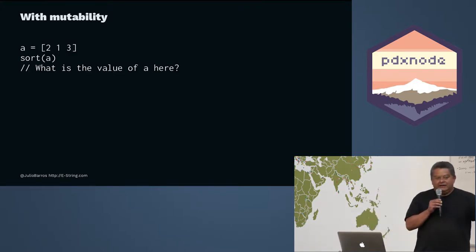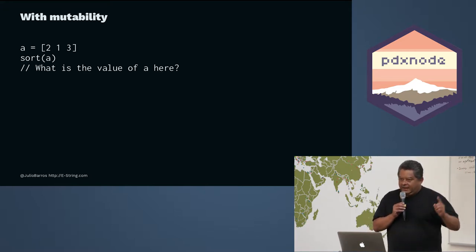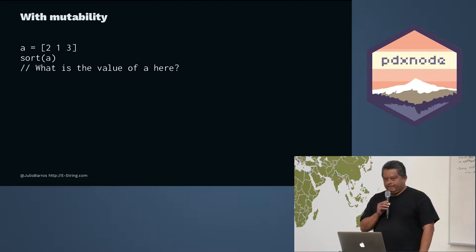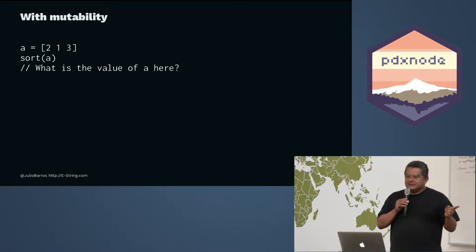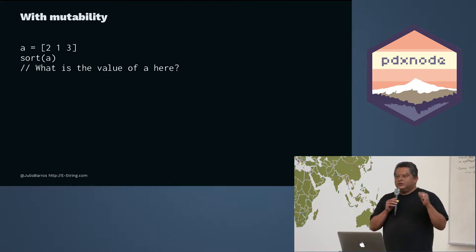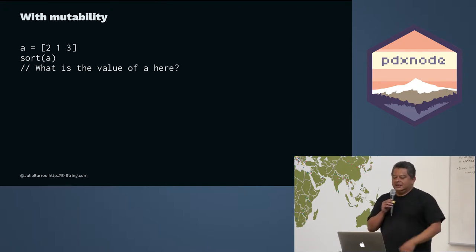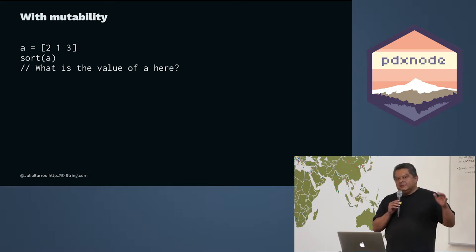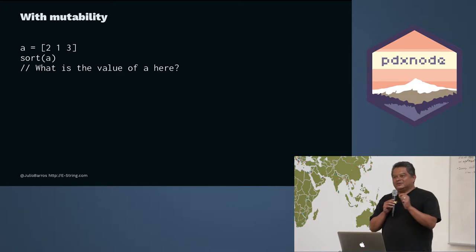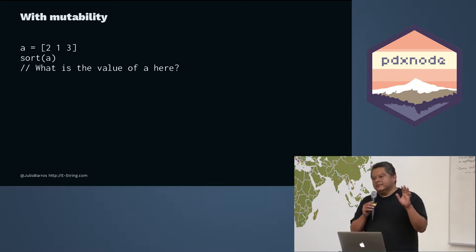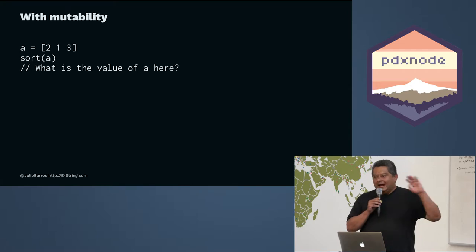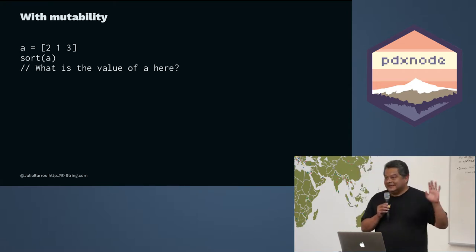First, why immutability matters. When you have mutable data, you poke your program in one spot and something somewhere else changes. If I have array A as [2,1,3] and I call sort on A, what is the value of A? It depends on the language — a lot of languages sort in place, others return a sorted array. You don't know if A changes. With ClojureScript's immutable by default, almost 99% of the time you're not going to change A — the value of A is still [2,1,3].